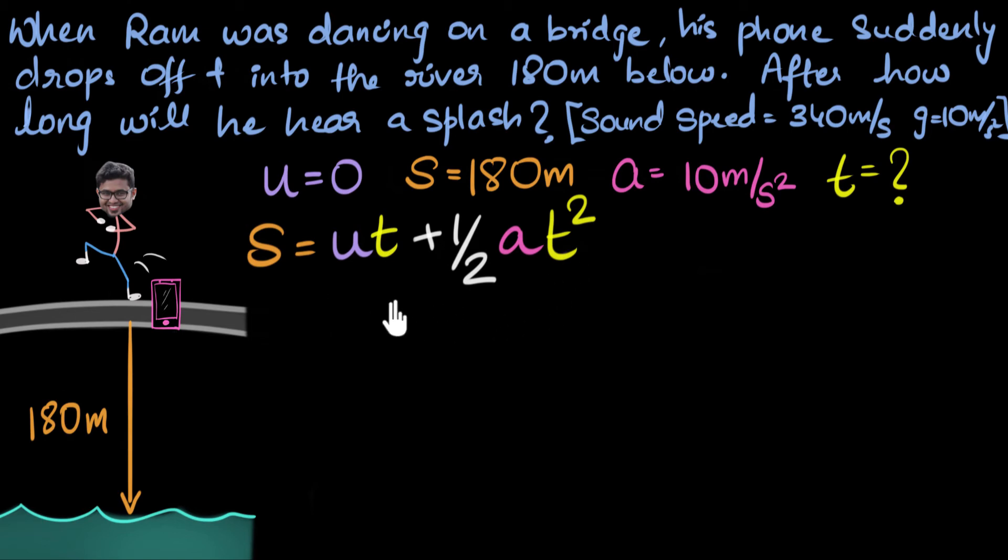And you know what? If you didn't solve this before, again, now would be a great time to pause the video and see if you can try this yourself. See if you can substitute the values and find the value of t. All right, let's do this. S is 180. I won't write the units because all units are standard, so the unit of t will also be standard, seconds. S is 180. u is zero, so this whole term will be zero. So zero plus half a, which is 10, times t squared.